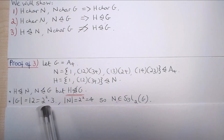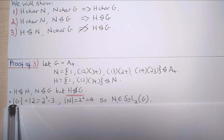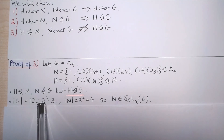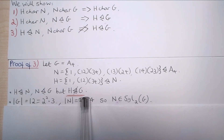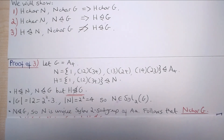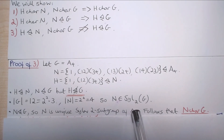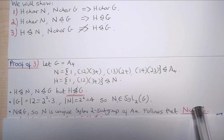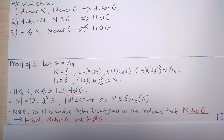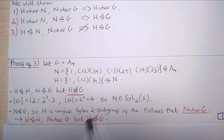Now let's turn to Sylow theory to show that N is characteristic in G. We have that the size of G equals 12, which equals 2² times 3. N is of order 4, so N is a Sylow 2-subgroup of G. We have that N is normal in G, so N is the unique Sylow 2-subgroup of G by conjugacy. And in the previous part we showed that this implies N is characteristic in G. So we have H normal in N, N characteristic in G, but H not normal in G — establishing the third result.